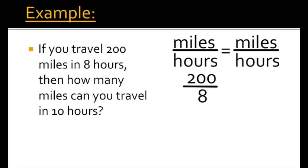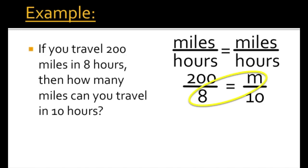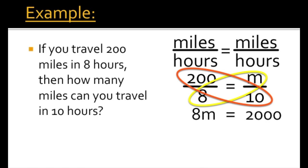We're trying to find how many miles we can travel in 10 hours. We have the denominator, which is 10. What we don't have is the number of miles, so we'll set this side up as m over 10. It's always good to choose the best variable — here we're missing miles, so m stands for miles. Now we cross-multiply: 8 times m gives us 8m, and 200 times 10 gives us 2,000. So we have 8m equals 2,000.